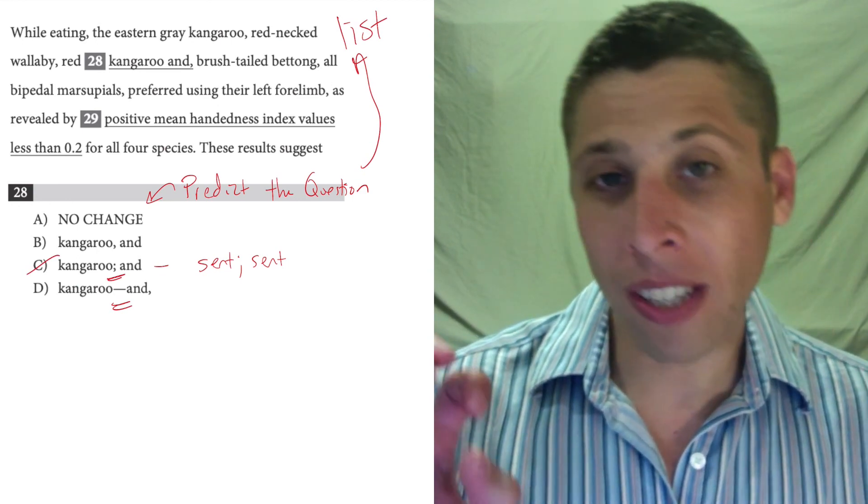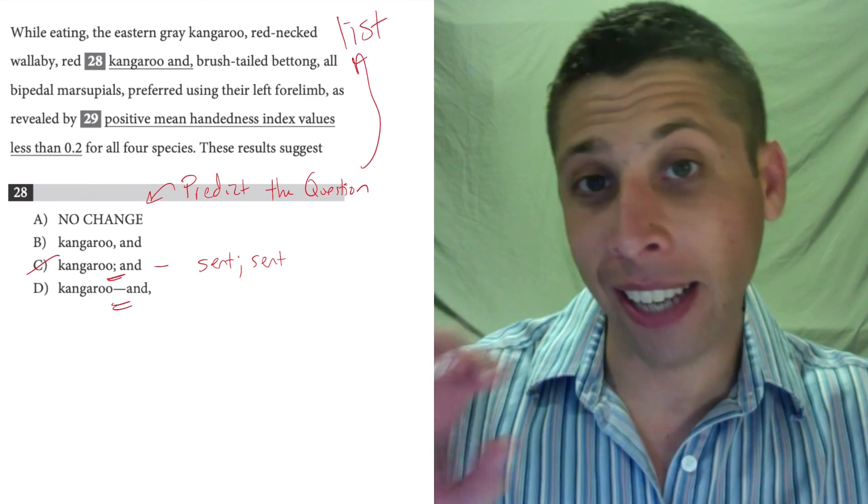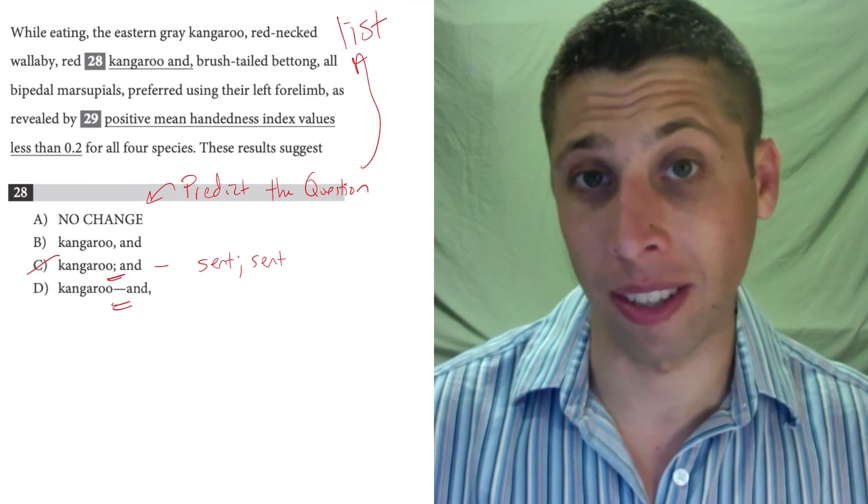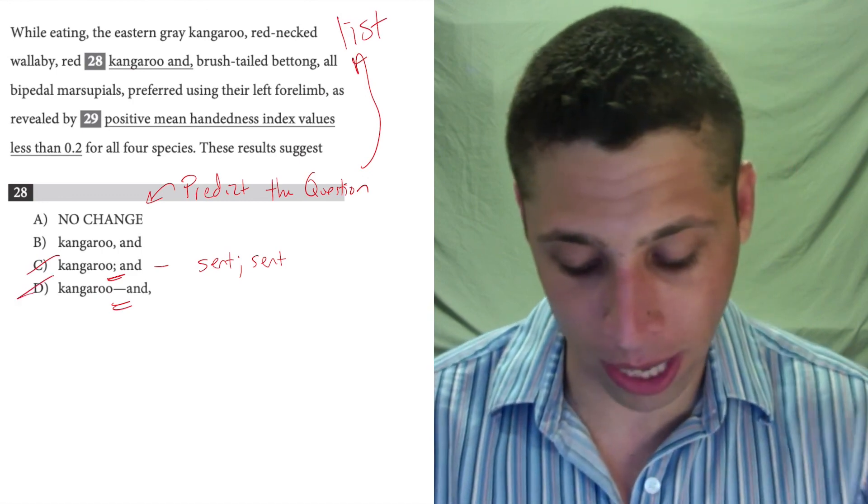And sometimes we see dashes with lists, but they're always at the beginning and the end, kind of separating the list out from the rest of the sentence, like it's an interruption. And so we don't have that here, it's just this random dash.